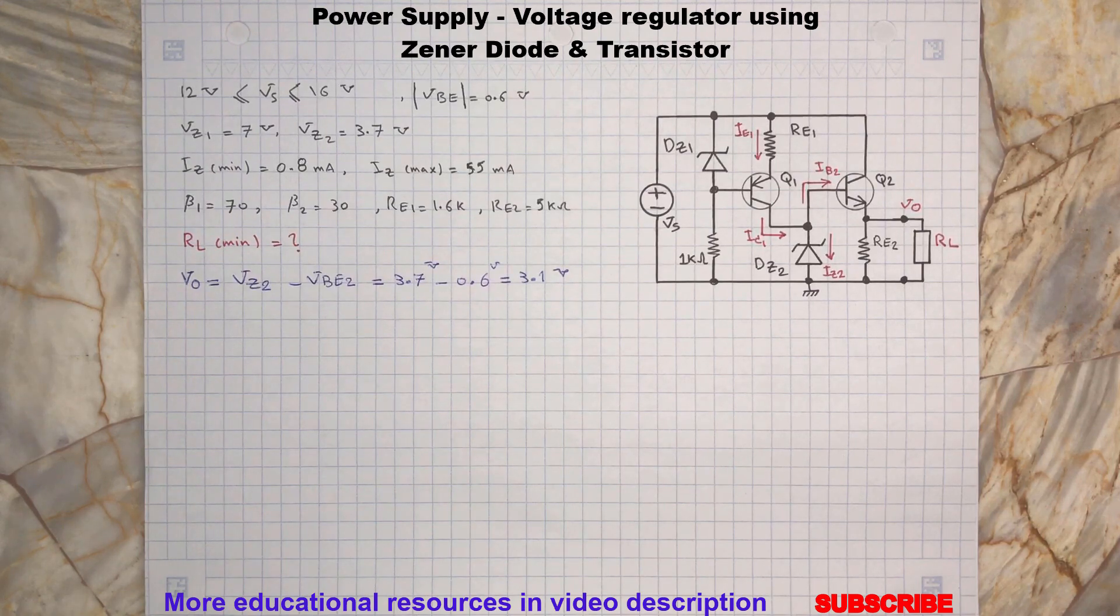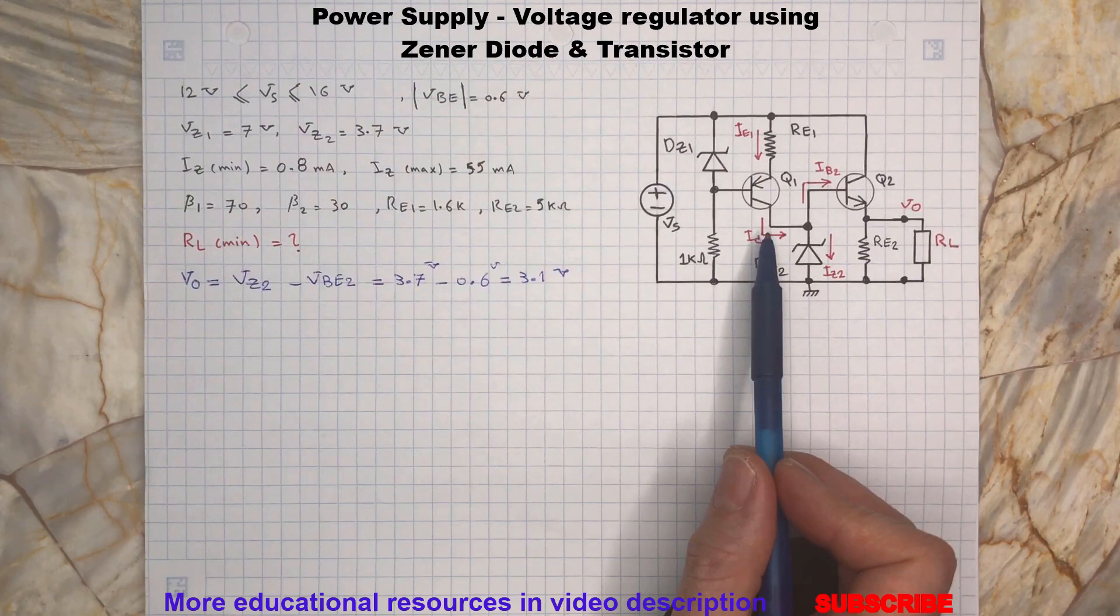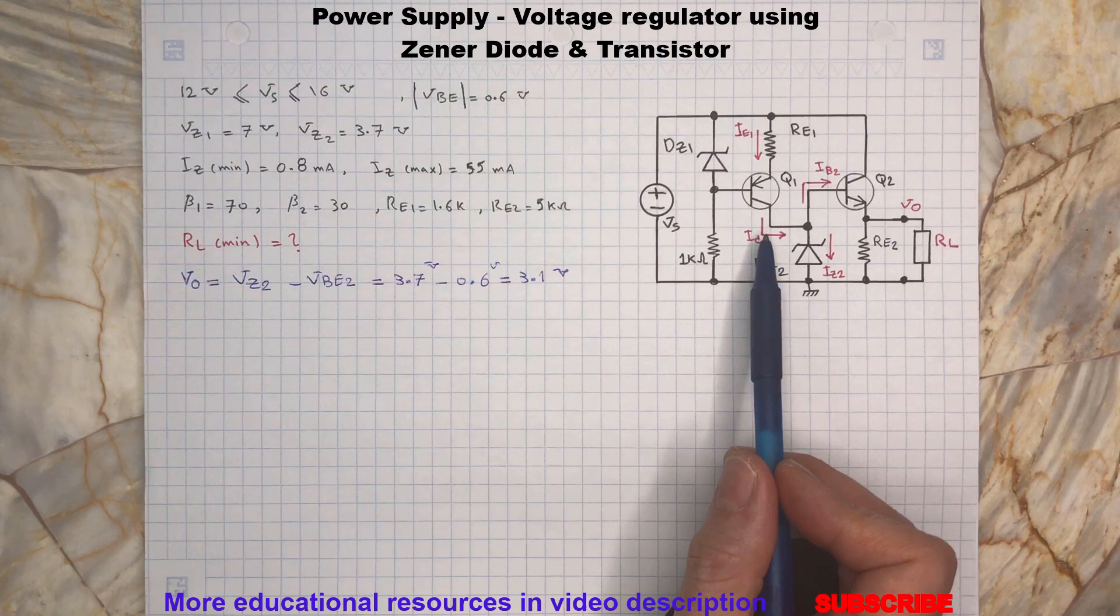To begin we should verify if the Zener diode 2 is on because if this diode is not getting the minimum bias current 0.8 milliamp then it will remain off and we won't have the expected regulated voltage for the output. As you can see here the collector of the transistor Q1 is providing the current for the Zener diode 2 and base of the transistor Q2.